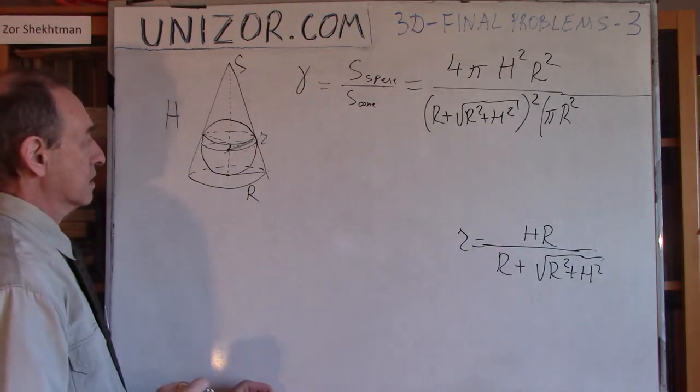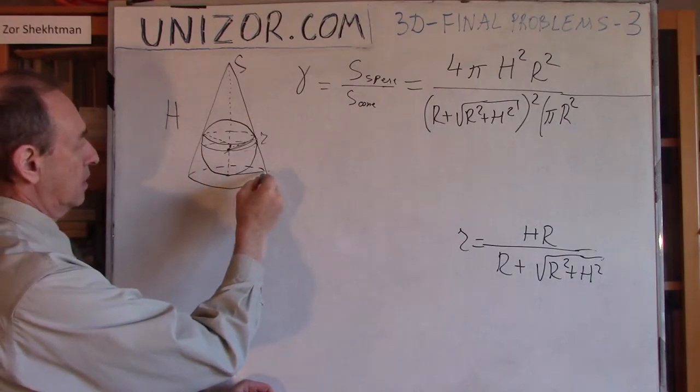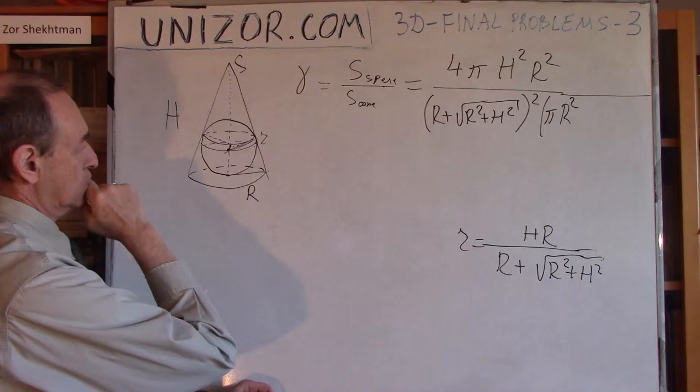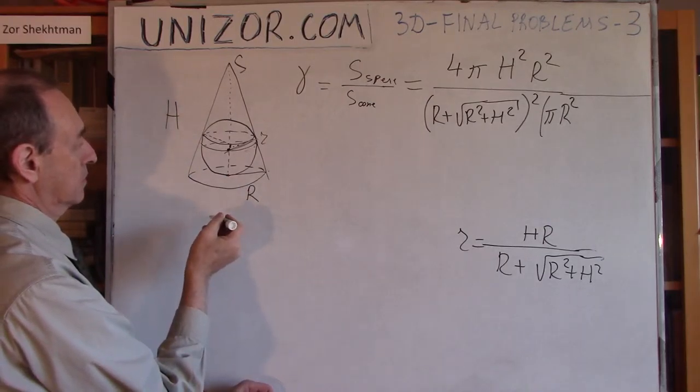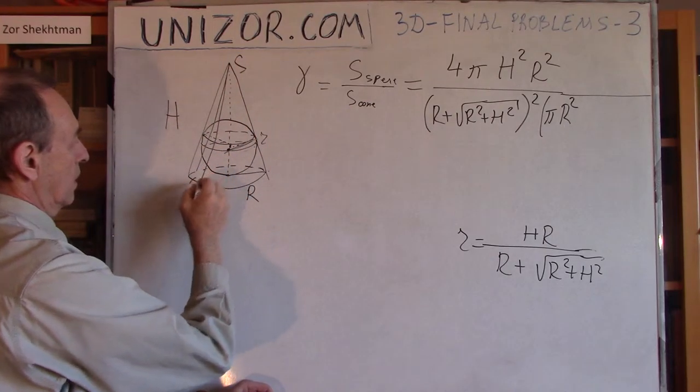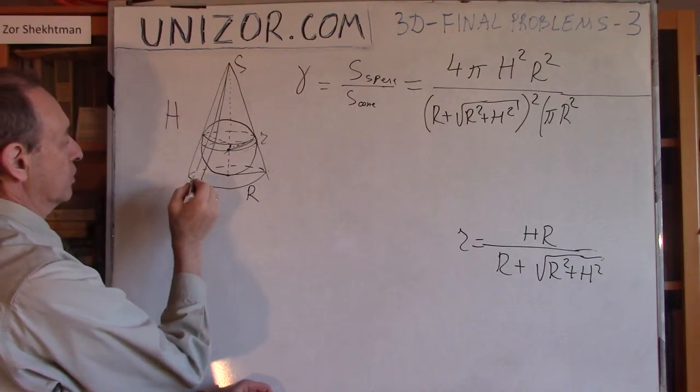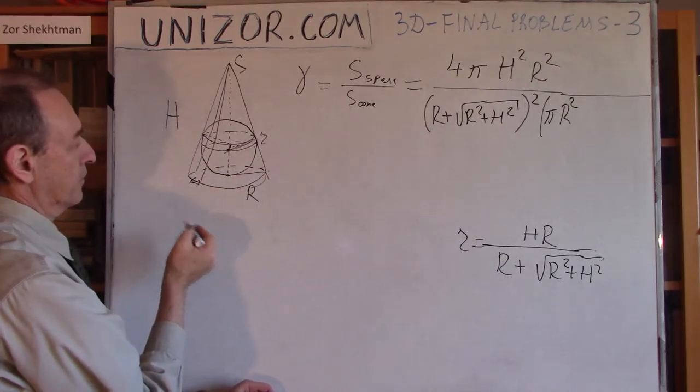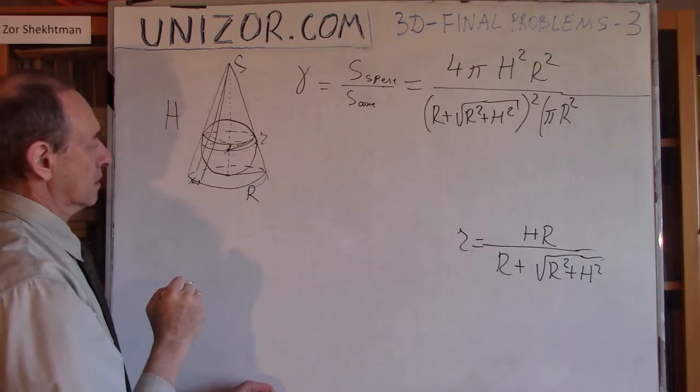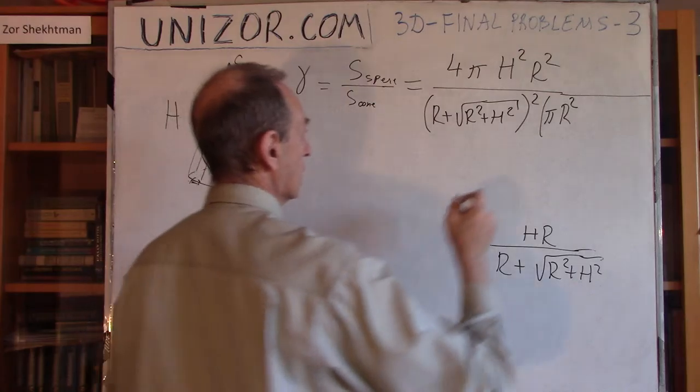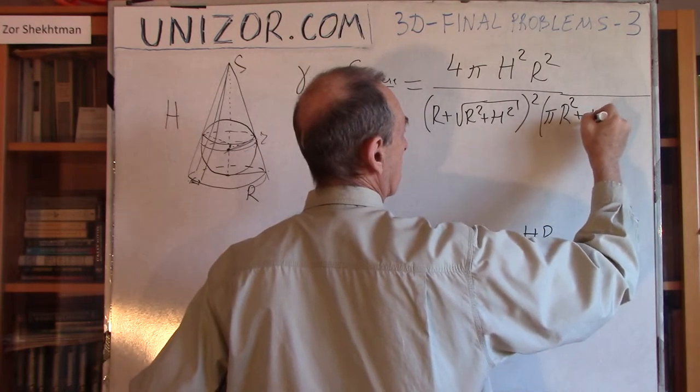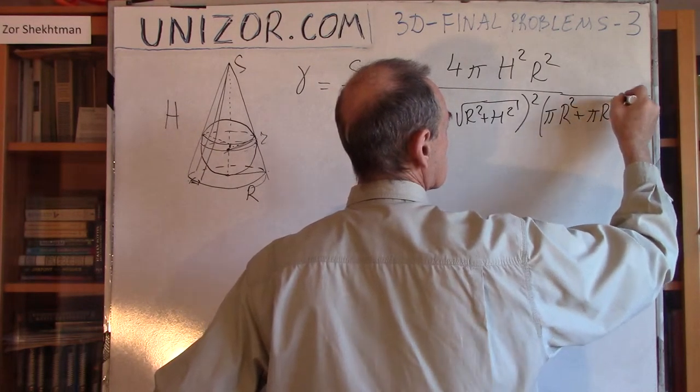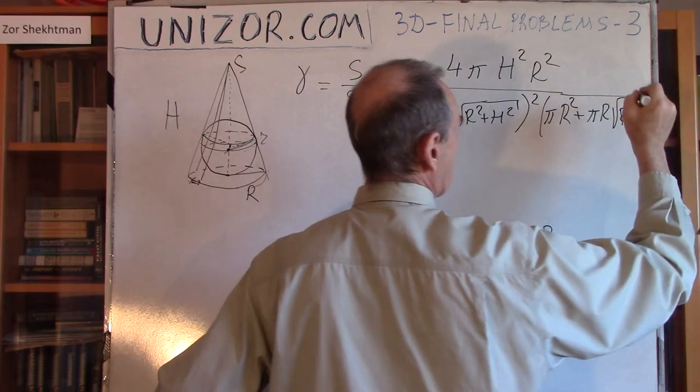The side surface is perimeter times this generatrix divided by 2. If I have a small triangle here, it will be this times height divided by 2. If I have many small triangles, the height will be the same as the generatrix, and the sum of these would be the lengths of this circle. It's 2πR divided by 2, which is πR, times generatrix - square root of R² + H². That's my formula.